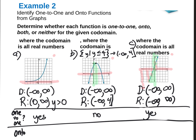Is each one onto? To be onto, the codomain and range must be the same. For letter A, the range is 0 to positive infinity but the codomain is all real numbers — so no, it's not onto. For letter B, the range is negative infinity to 4, and the codomain is also negative infinity to 4 — yes, that is an onto function. For letter C, the range and codomain are both all real numbers — yes, it is onto.